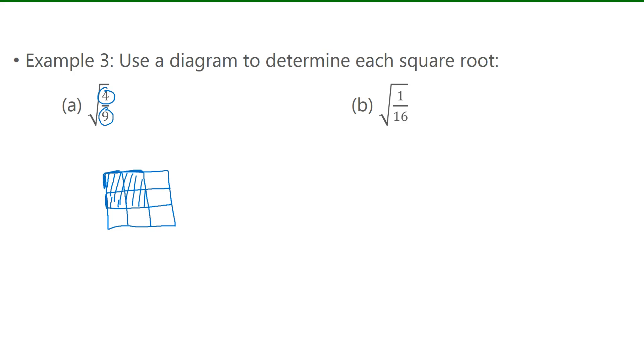Now the square root is going to be the dimensions of the square. So looking at the side lengths, here we shaded 2 of the 3 blocks. And down the side, once again, we shaded 2 of the 3 blocks. So the square root ends up being 2 over 3.